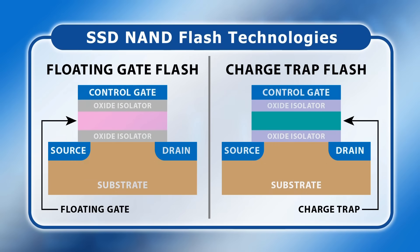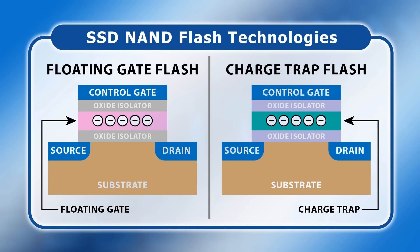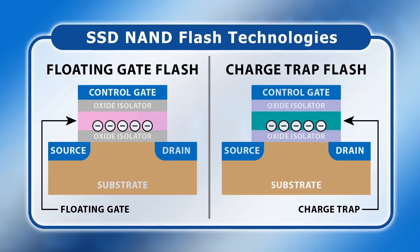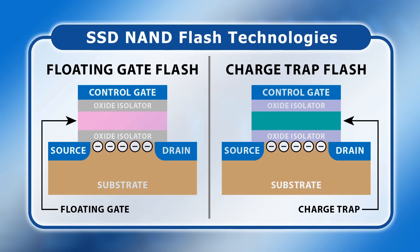To write or program data, a voltage is applied to move electrons into a floating gate or charge trap. The presence of these electrons changes the resistance between the memory cell's source and drain, and this can be measured by passing a current between them. Whilst NAND flash cells can be individually written, they can only be erased in blocks, by applying a voltage or field to remove the electrons from the floating gate or charge trap.